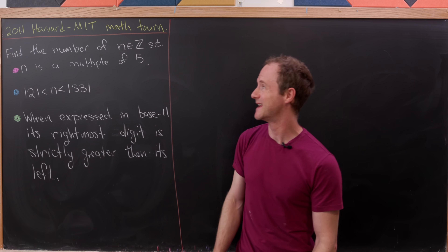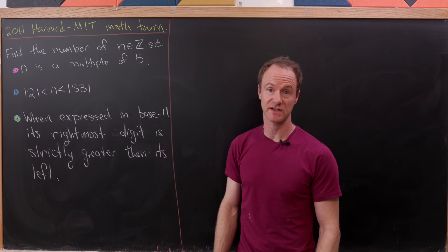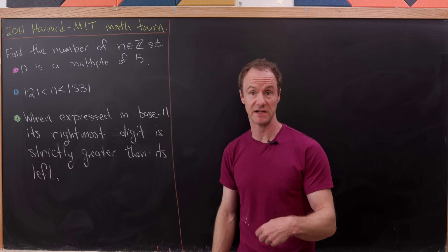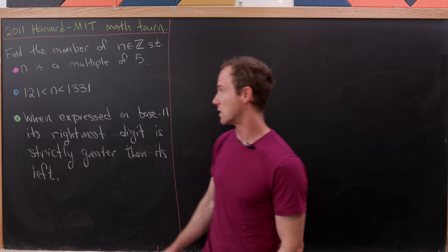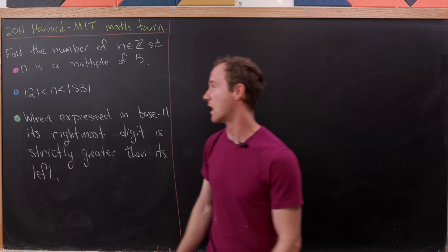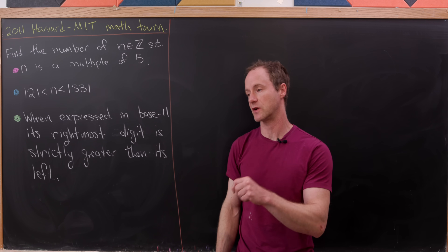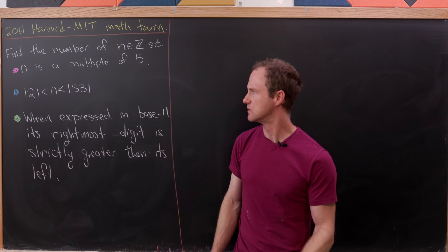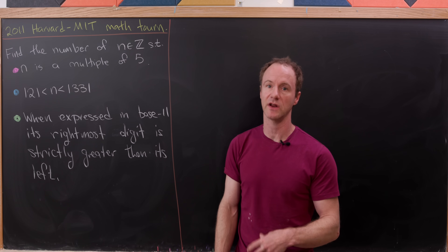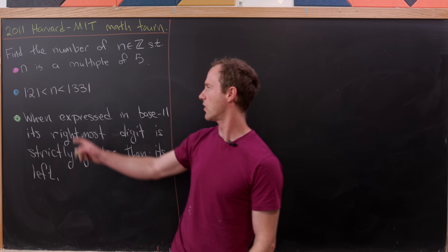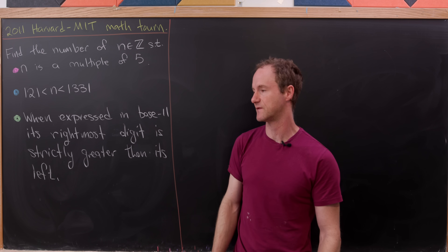The first condition is that n is a multiple of five, which restricts us to 0, ±5, ±10, ±15, and so forth. The second condition is that n is between 121 and 1331. So now we're restricted to 125, 130, 135, all the way up to 1330 — those are all the multiples of five.